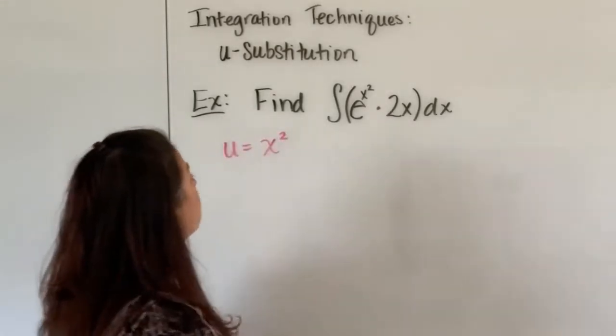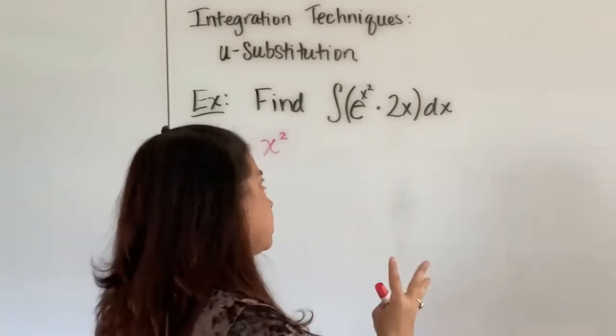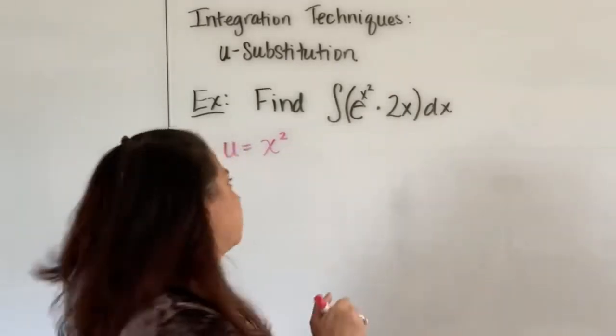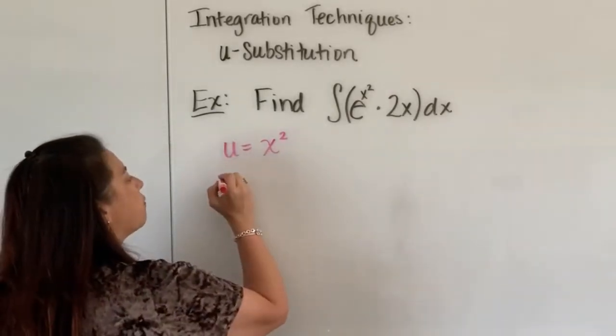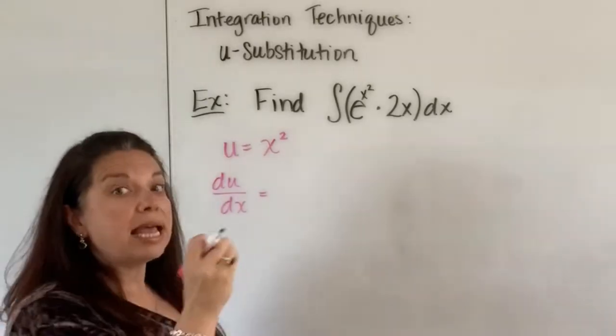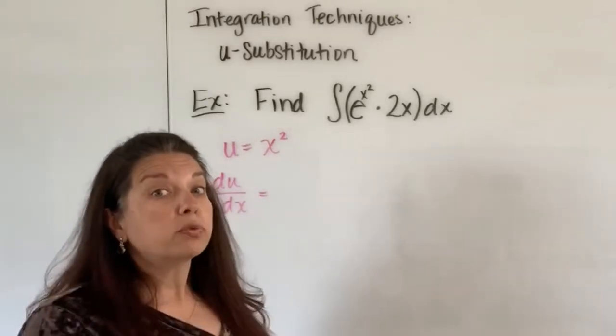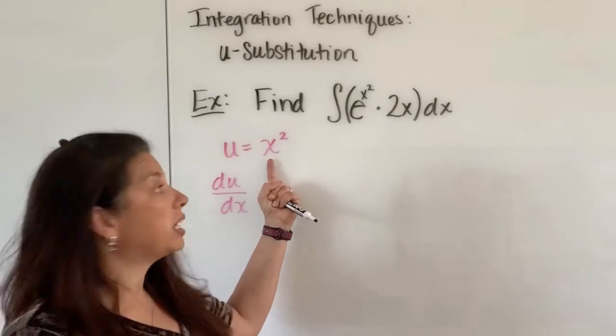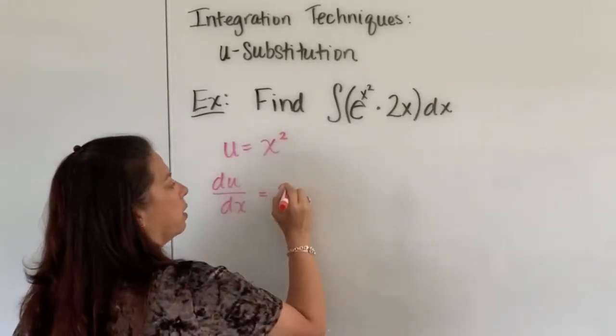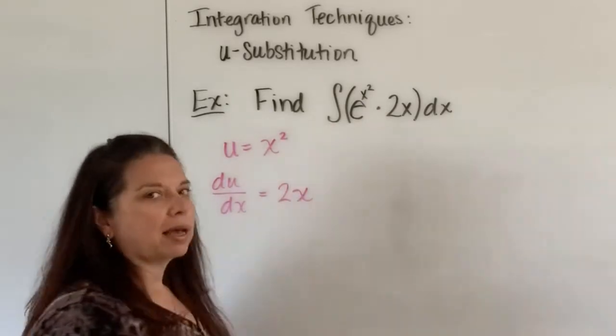So I'm going to let u equal x squared, and then I want to find that derivative. I want to literally find what du/dx is. I want to take the derivative of u with respect to x because I have x's hanging out here. So in doing so, I take the derivative of x squared which is just 2x.